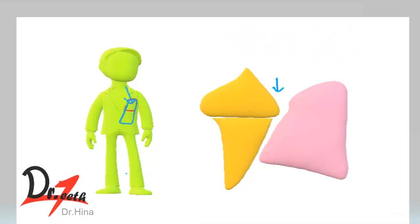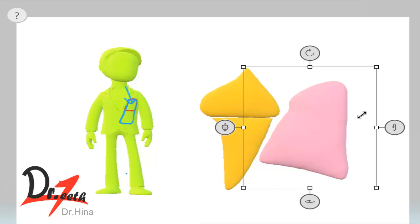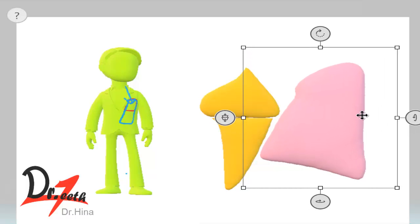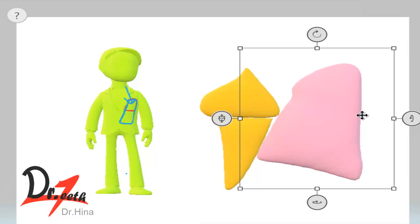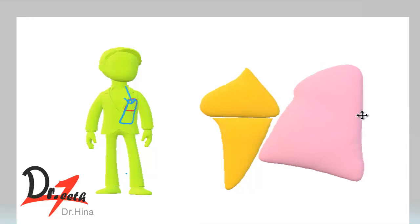This deepening could be due to two reasons. First, our gingiva could be enlarged. If the gingiva is enlarged, you can imagine that the sulcus depth seems to increase because we are measuring from the top of the gingiva down. This type, where the depth increases due to gingival enlargement, is called the gingival pocket.